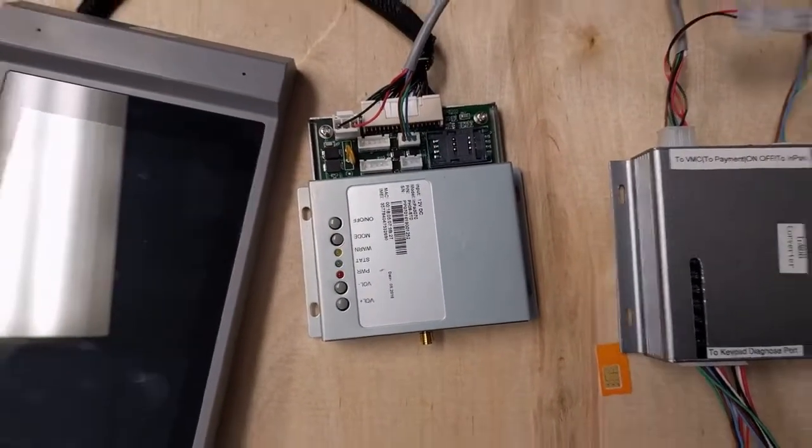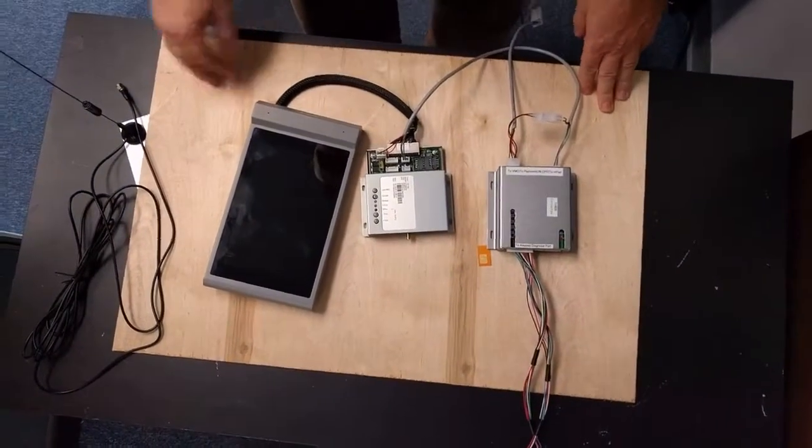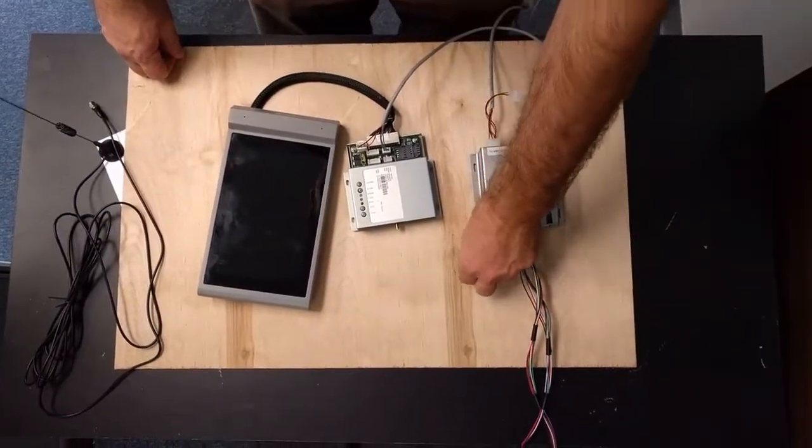Now we're going to connect between the MDB converter and the 3G cellular module. I've connected my 3-pin power plug and the small 3-pin serial connector on the top right. Now we've seen how our N-pad smart vending retrofit solution is wired up and we're going to test the cellular connectivity.